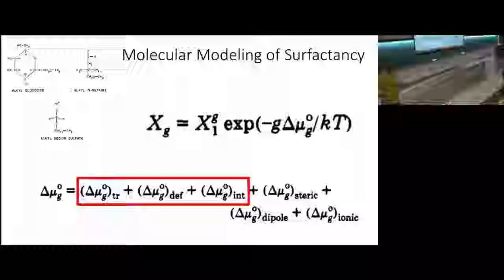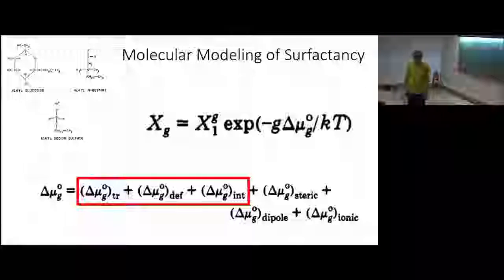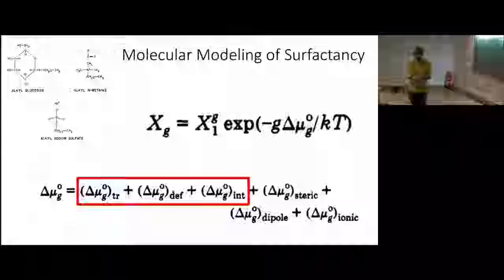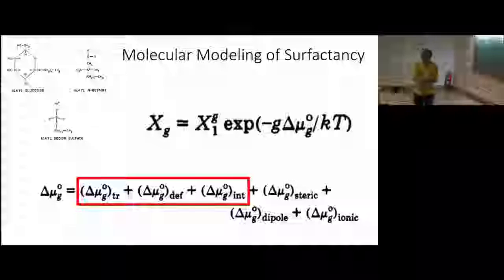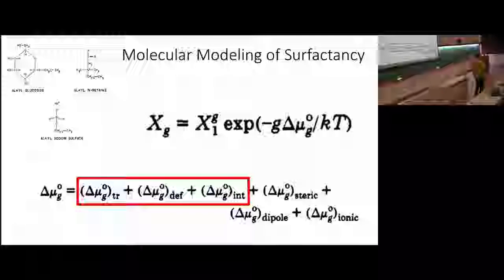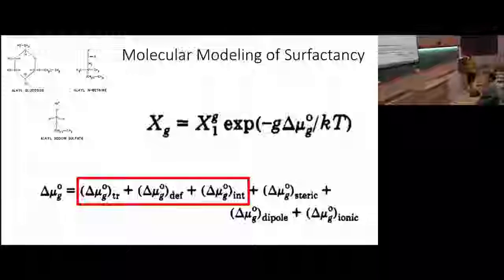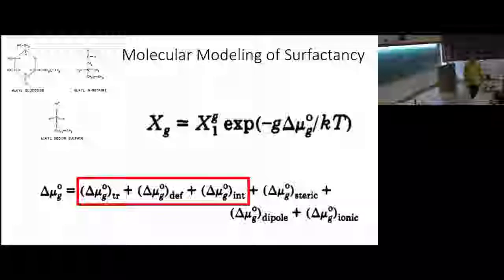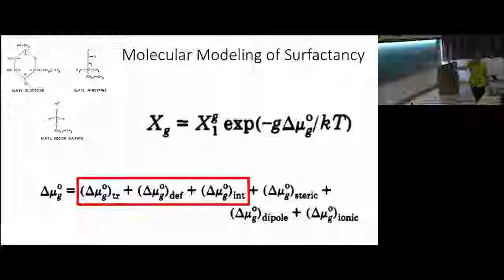This is starting to get much more refined, and I want to walk you through this refined analysis. The principles are all set — I want to tell you what it takes to start getting quantitative information. There are six terms here, but it turns out in the end these three are the only ones that matter. This delta mu zero deformation is what I spent all of yesterday talking about — it's the entropy deformation of the tail of the surfactant. That's really the new piece of physics put in because of all the work that people did with polymers.